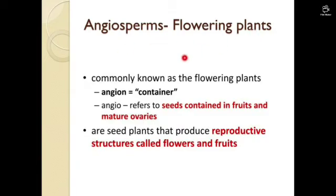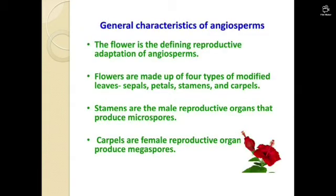Angiosperms are the flowering plants, commonly known as the flowering plants. 'Angio' means container — angio refers to seed-containing fruits and mature ovaries. These are the general characteristics and the reproductive structure of angiosperms.